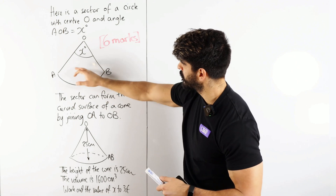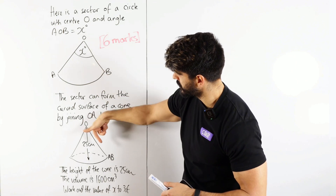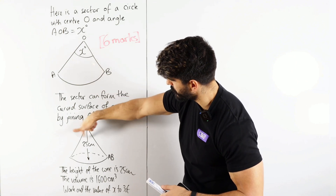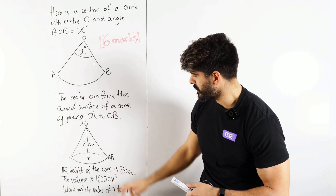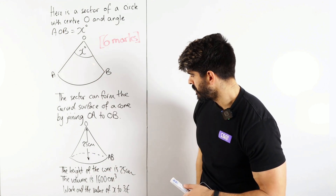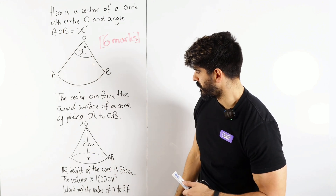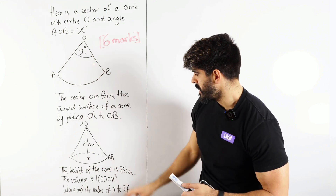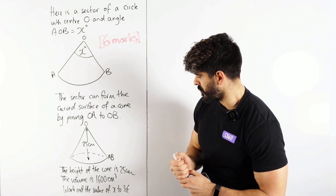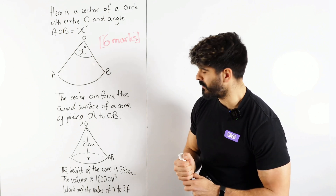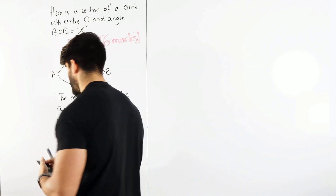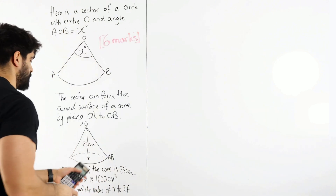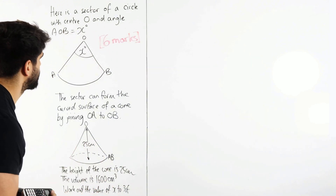So the area of the sector is the same as the area of the curved surface. The question tells us the height of the cone is 25 centimetres and the volume is 1600 centimetres cubed. Work out the value of X — six marks, give it to 3 significant figures.